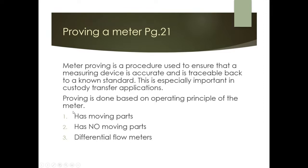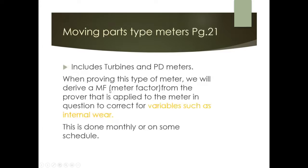Proving is based on the operating principle of the meter. We'll look at meters with moving parts, meters with no moving parts, and differential flow meters. Moving parts meters include turbine meters and positive displacement meters, both of which have recognizable moving components — turbines spin, and PD meters move or rotate when flow passes through.